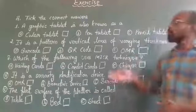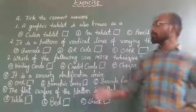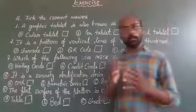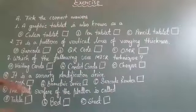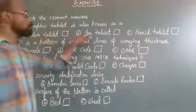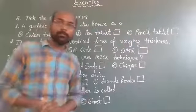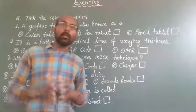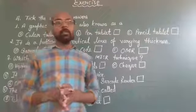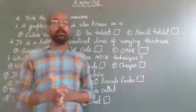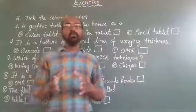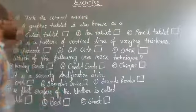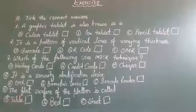Question number 1 is: a graphic tablet is also known as a. Option A is color tablet, option B is pen tablet, and option C is pencil tablet. If you are choosing option number B, then your answer is right. Graphic tablet is also known as pen tablet. It is a touch sensitive device and a stylus is used to draw or sketch on any surface.